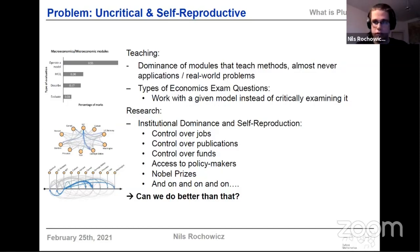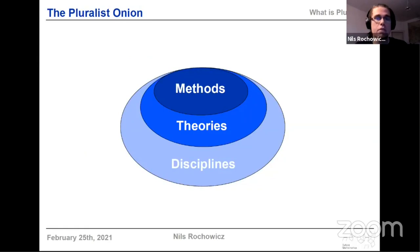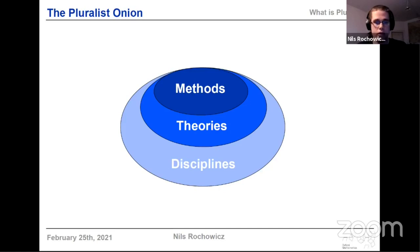So if that's the situation we agree on, is there a way to do better? The answer by the student movement, but also by many researchers, has been yes — we can do better, and we need to be a more pluralist science. Pluralism is mainly defined along three lines of thinking: we need a pluralism in methods, a pluralism in theories or schools of thought, and a pluralism of disciplines.